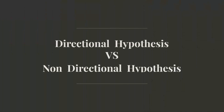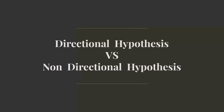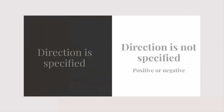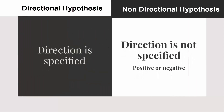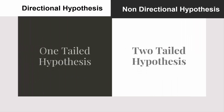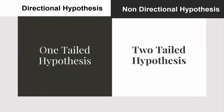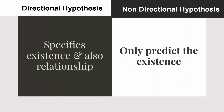There are many differences between directional and non-directional hypotheses. One: directional hypotheses are hypotheses in which the direction is specified. On the other hand, non-directional hypotheses are hypotheses in which the direction is not specified, whether positive or negative. Two: directional hypothesis is also known as one-tailed hypothesis, while non-directional hypothesis is known as two-tailed hypothesis. Three: directional hypotheses specify the existence and also the direction of the relationship. On the other hand, non-directional hypotheses only predict existence.